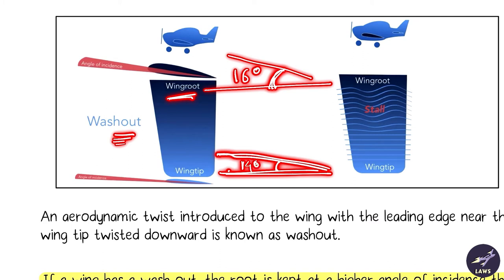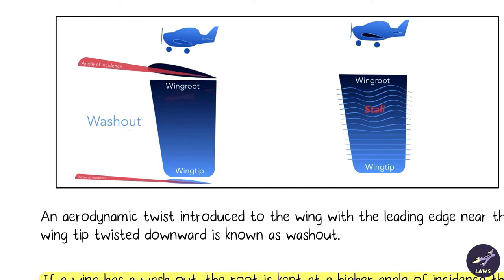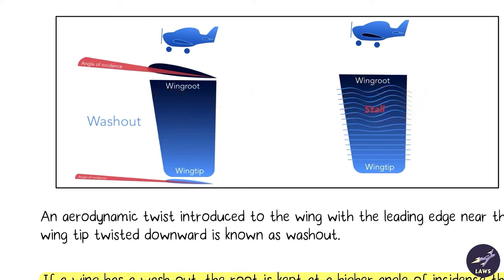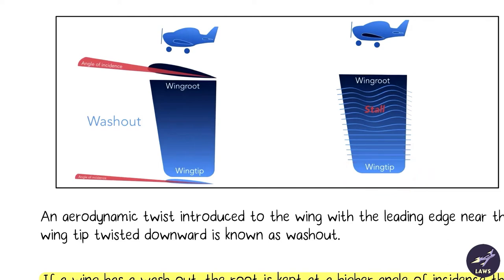Due to washout, the tip angle of attack may only be 14 degrees when the root is at 16 degrees. The wing root stalls first, the wing tip is saved, and you still have aileron effectiveness — so if something happens you can still control the aircraft.